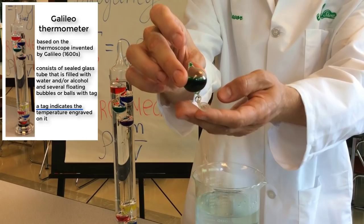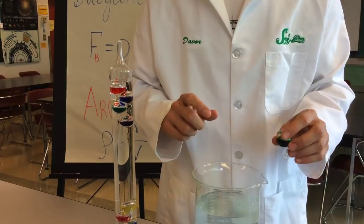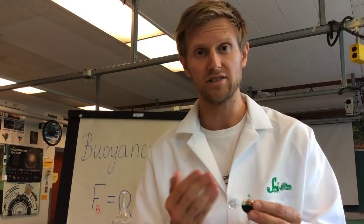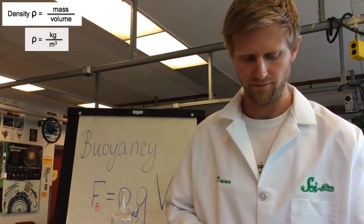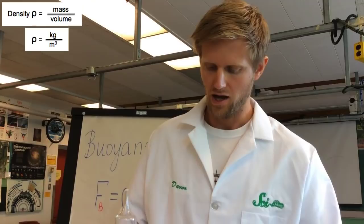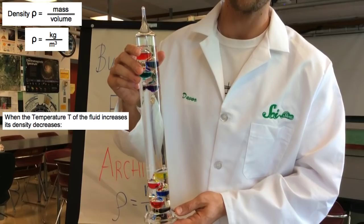And the way this works is that each of these little balls has a different density. And the densities are calibrated by how much fluid is put in and the mass of the tag at the bottom. Because density depends on the volume and on the mass. So, each of these little balls has a density that's very close to the density of this fluid. And the density of this fluid changes with temperature.